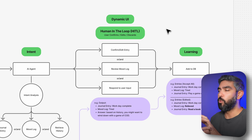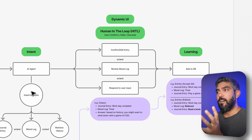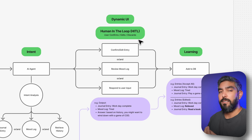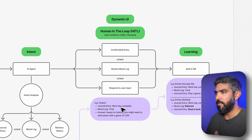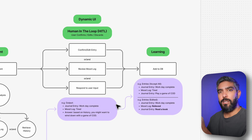We then proceed to the essential step where we include the human in the loop. This step has a dynamic UI based on what the AI agent outputs — it will adapt to display up to three different types of output: a journal entry, a mood log, and a response to the user's input. You must give the user the ability to edit, confirm, or discard all of these suggestions, because it's always essential to keep the user in control. After the user edits or confirms and clicks save, all of it gets saved to the database.